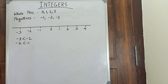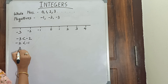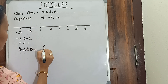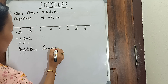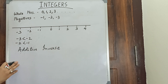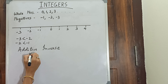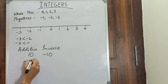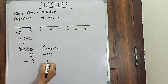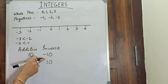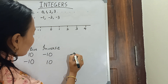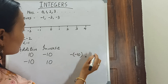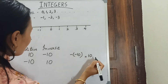Now let us know what is additive inverse. The additive inverse of a number is the inverse of that number — for example, the additive inverse of 10 is minus 10. The additive inverse of a negative number is a positive number. For instance, the additive inverse of minus 10: we put a minus sign before minus 10, and minus and minus equals plus, so the additive inverse is positive 10.